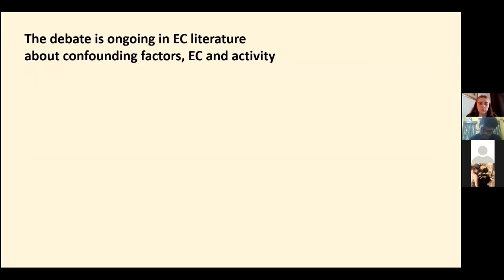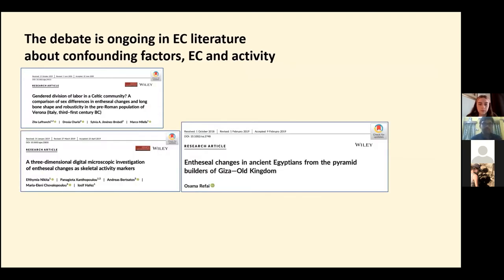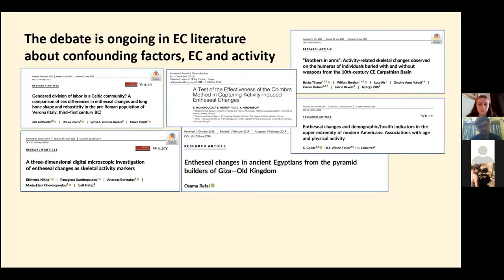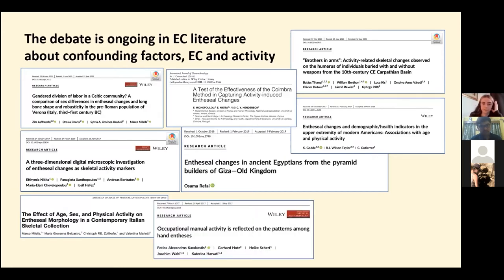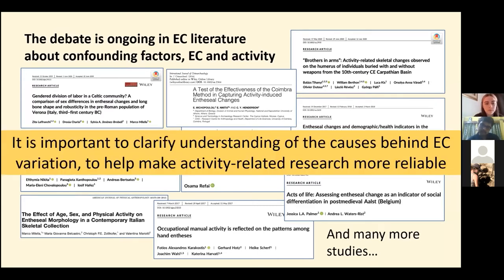The causes of EC are multifactorial and still being researched, and there's an ongoing debate in EC literature over issues such as which factor is the predominant confounder in activity interpretation, whether confounders affect some entheses more than others, and whether activity can still be interpreted reliably. There are many more studies and articles out there than shown on this slide — there's a lot to read up on if you're interested in this area.